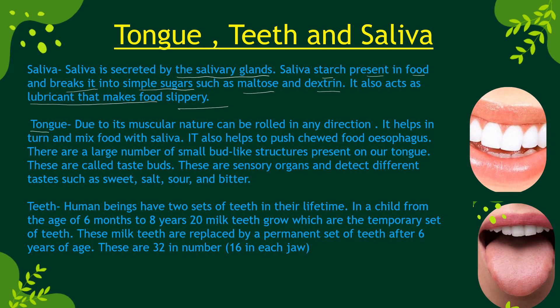The tongue is muscular in nature and can roll in any direction, helping to turn and mix food. It mixes saliva with the food and helps push food into the esophagus. There are numerous small structures on our tongue called taste buds, which allow us to detect different tastes. Taste buds are present all over the tongue.